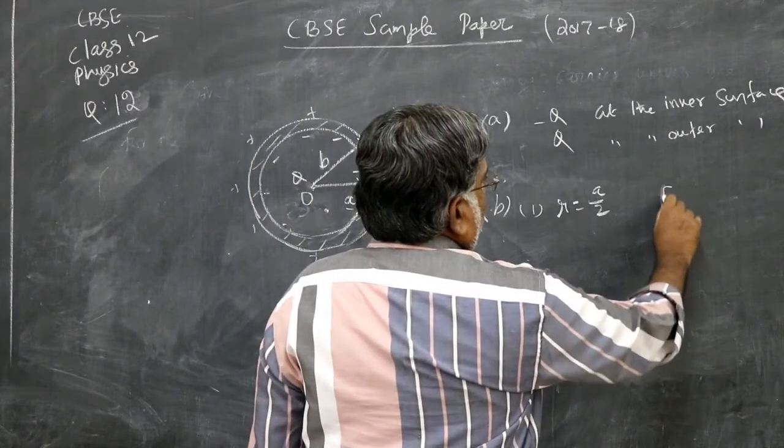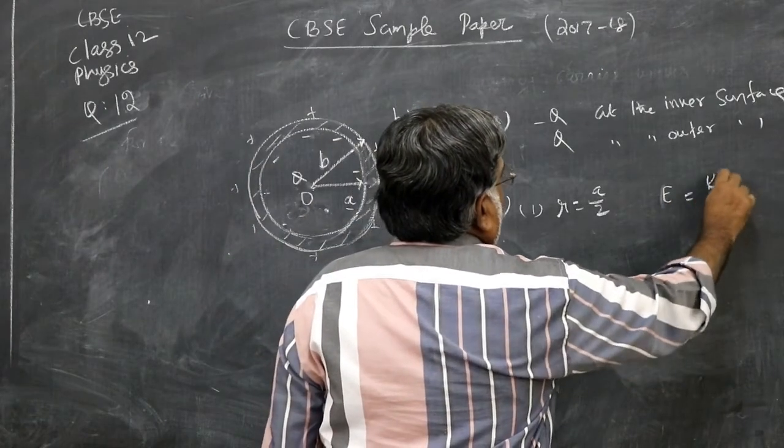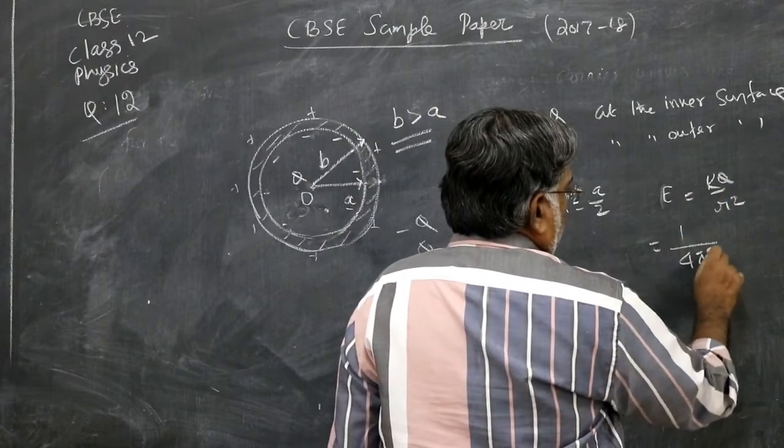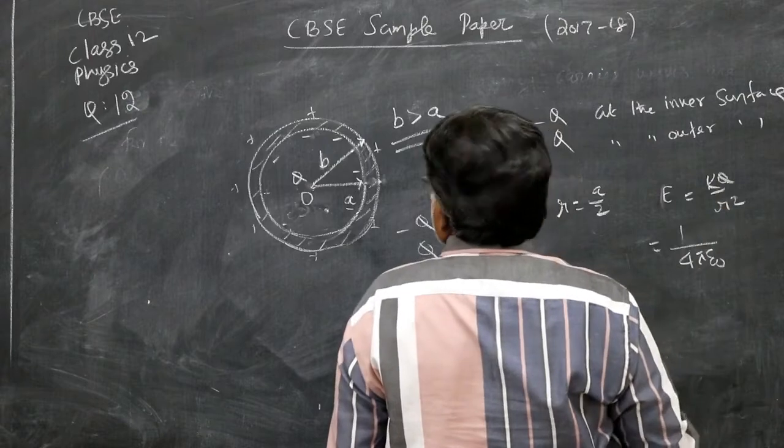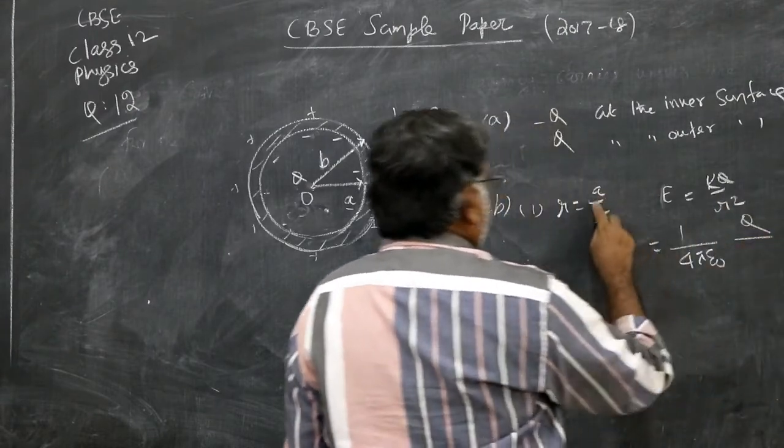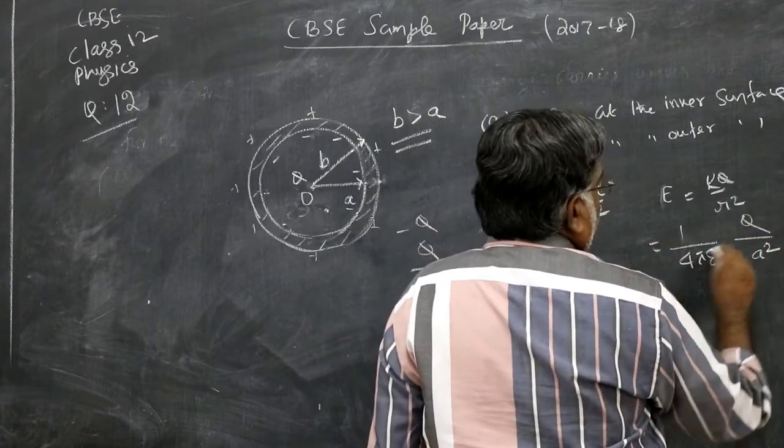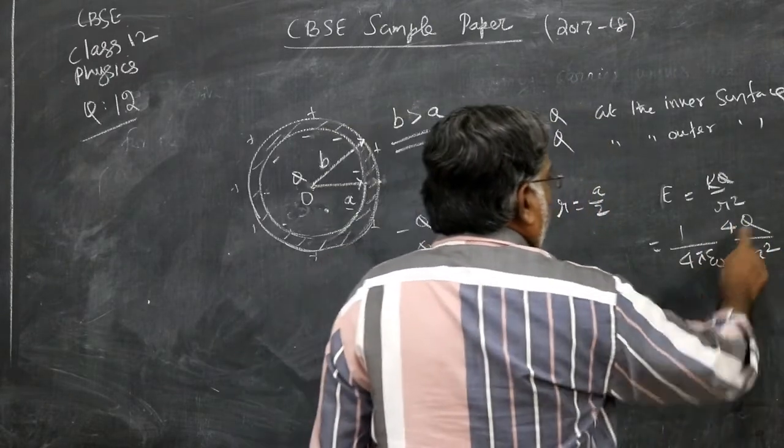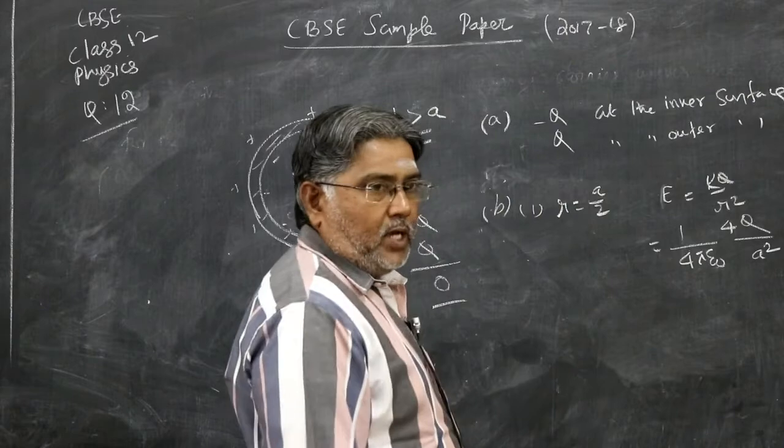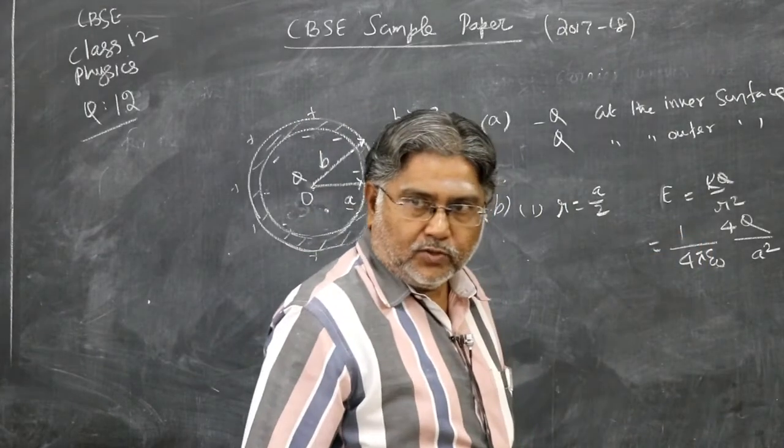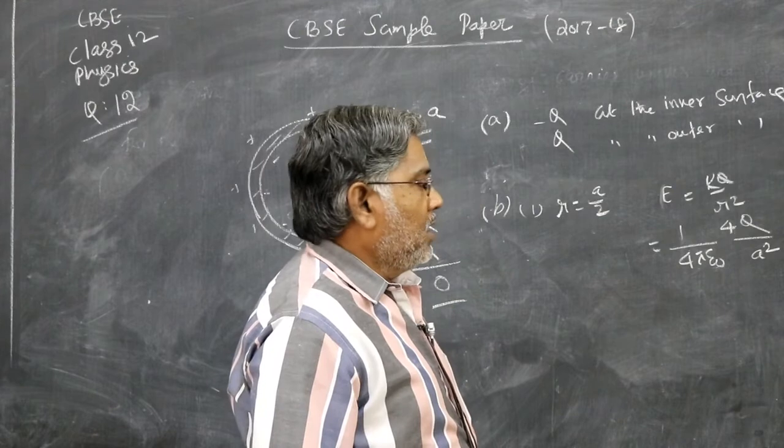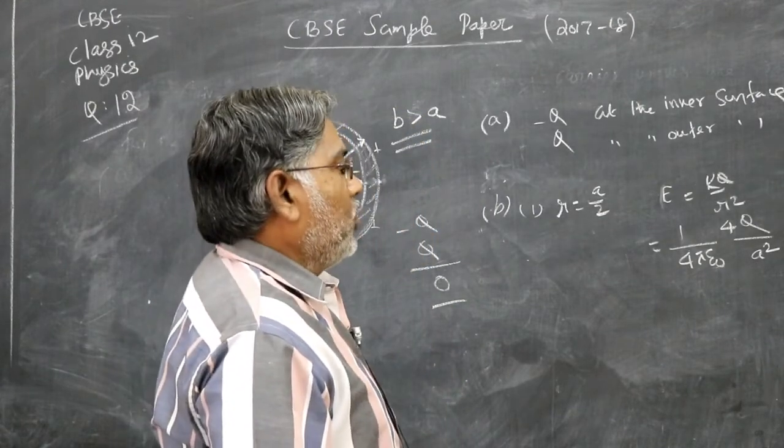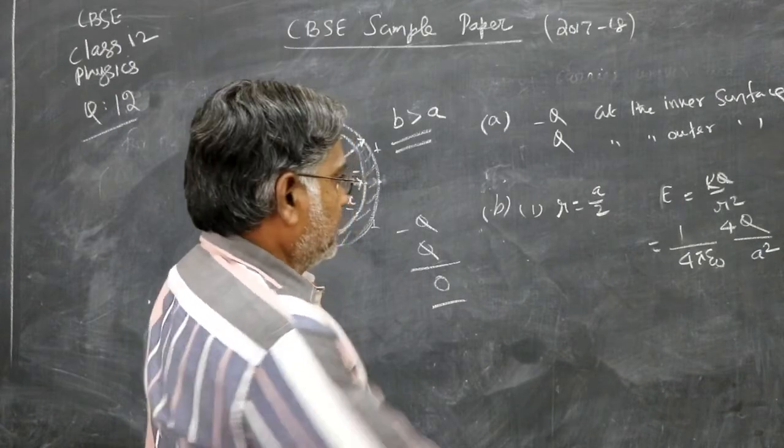Which is K Q by R squared. K is 1 by 4 pi epsilon naught. Q you are placing but R is A by 2. So A squared by 4. Therefore, 4 Q by 4 pi epsilon naught A squared. If you want even simplify it further or you keep it as it is. 4 Q by 4 pi epsilon naught A squared. As you see here.